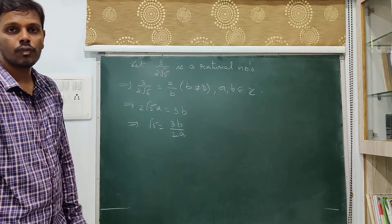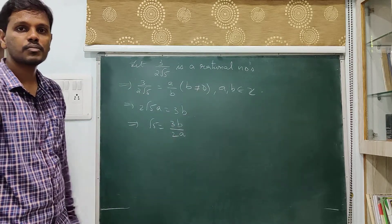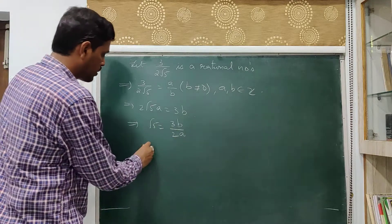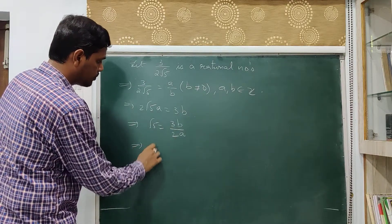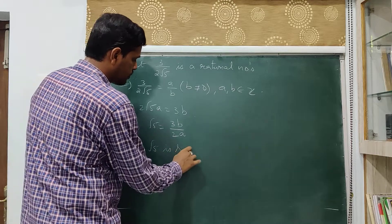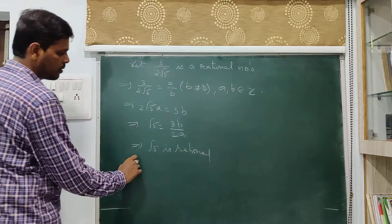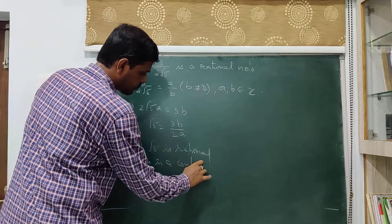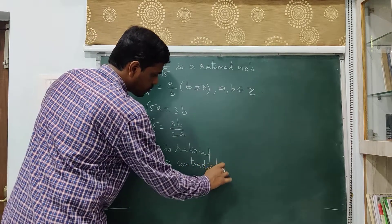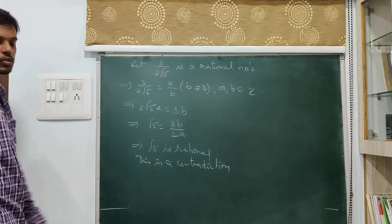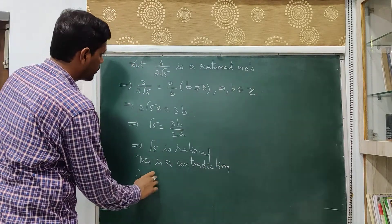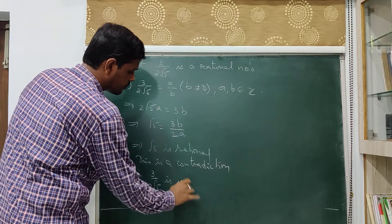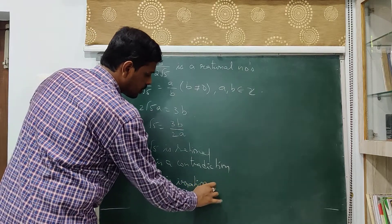The incorrect assumption is that 3 by 2√5 is a rational number. Therefore the correct conclusion is that 3 by 2√5 is irrational. These two statements — root 5 is irrational and root 5 is rational — are contradicting each other, and so 3 by 2√5 is irrational.